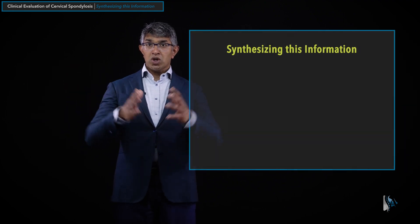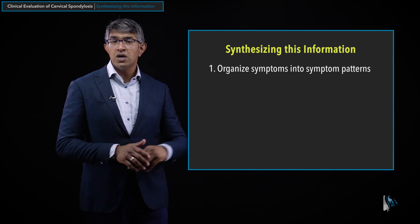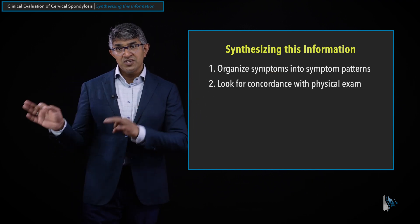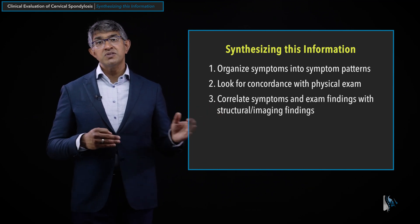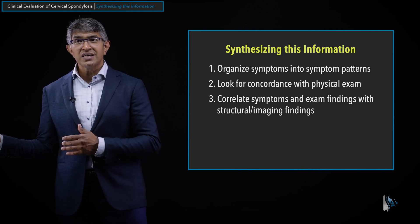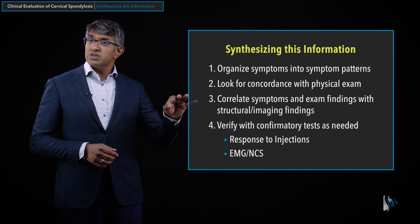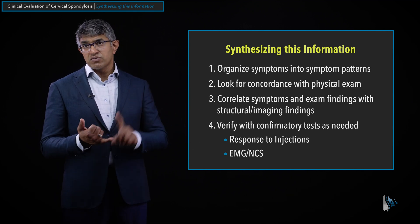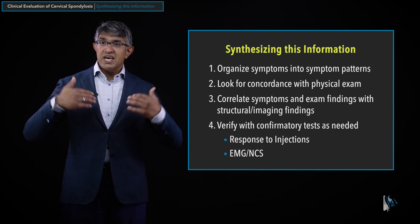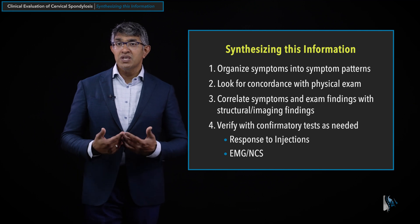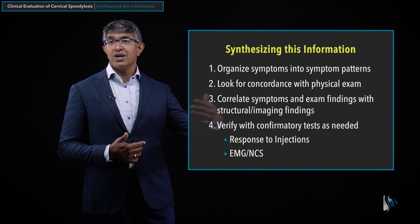When putting it all together, we first organize symptoms into symptom patterns. Then we look for concordance between the history and the physical exam. Then we try to correlate the symptoms and exam findings with structural and imaging findings. And lastly, we sometimes look at confirmatory tests such as response to injections or EMG nerve conduction studies. The goal of all of that is to arrive as confidently as possible at a cause for the patient's symptoms — which is the precursor for figuring out the right treatments.